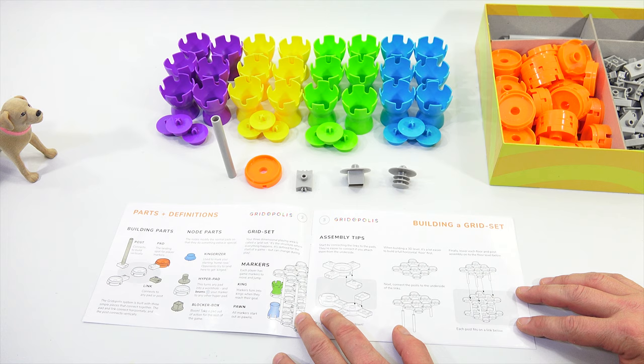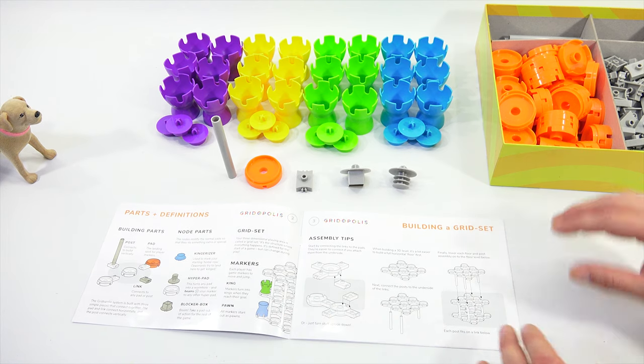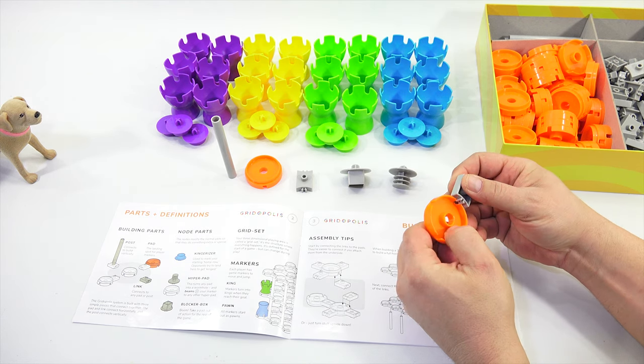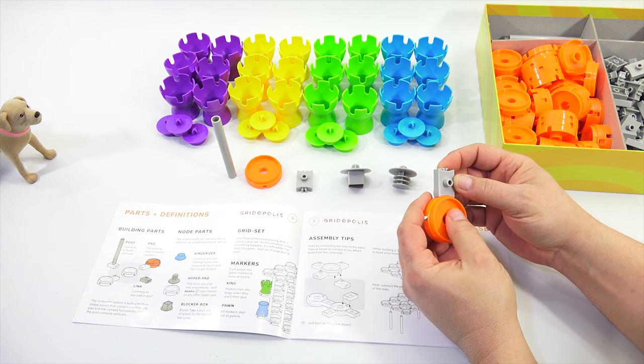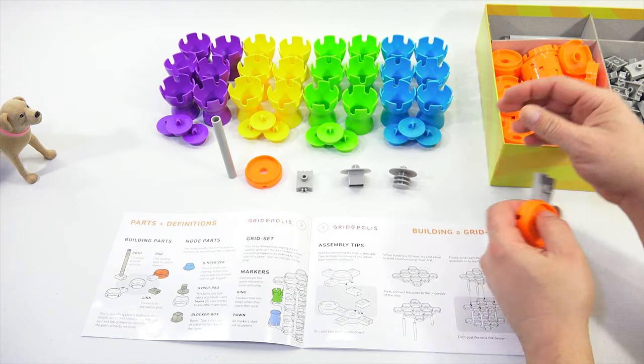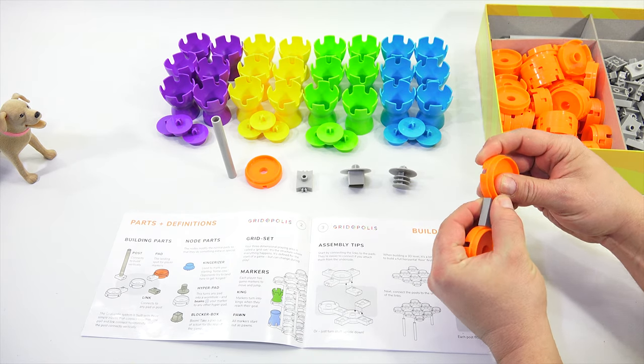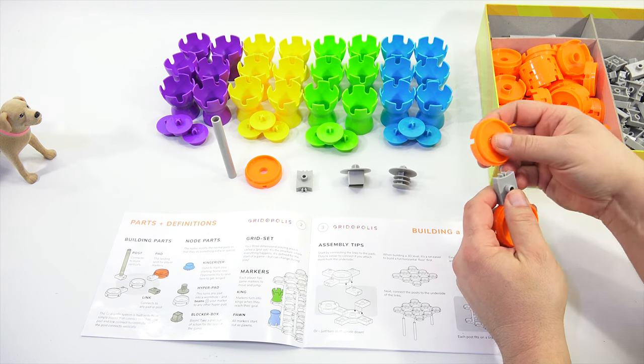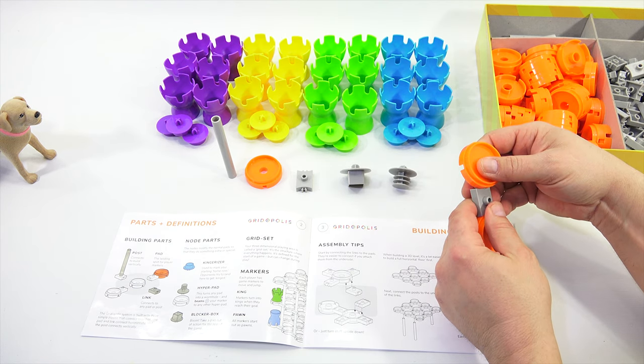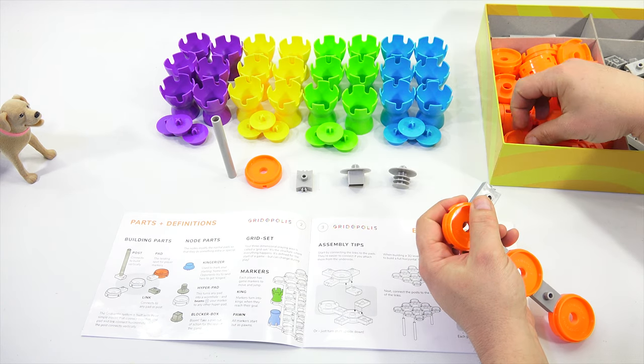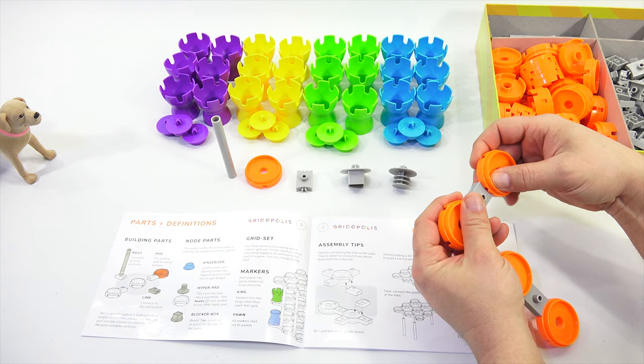Now what is next to the link? Formerly known as the canoiter. Don't you call it? Canoiter. Ah, yes. The blocker box. And next to that is the hyper pad. And then the kingerizers are in front of the markers. Mm-hmm. So now we know all the pieces. Markers, kingerizer, hyper pad. Blocker box, and then post pad link. Post pad link. All right. So not in that order, by the way. Mm-hmm. All right. So we need to build. Here's some assembly tips. Start by connecting the links to the pads.